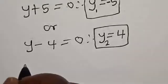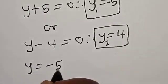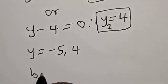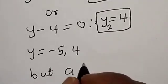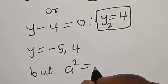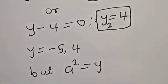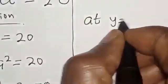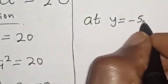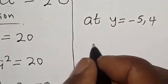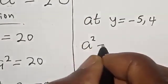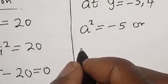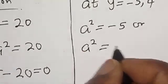For the value of y, y is equal to minus 5 and 4. But a square is equal to y at y equal to minus 5 and 4. So, a square is equal to minus 5 or a square is equal to 4.